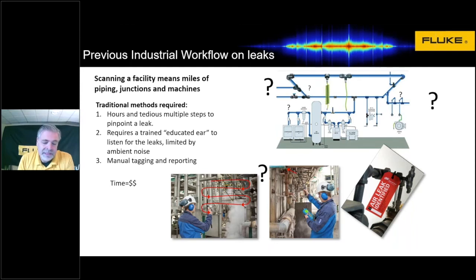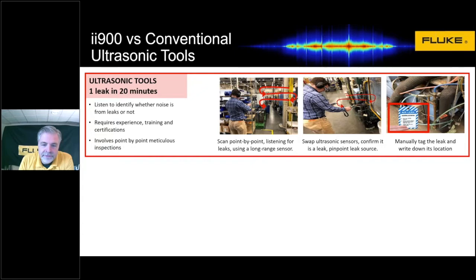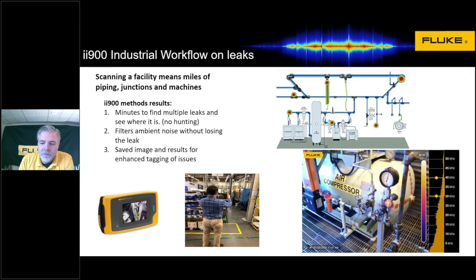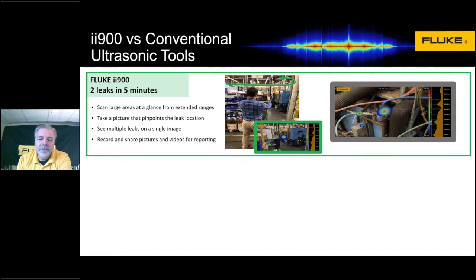This whole process took a lot of time. We went to a customer location very early on in the process of introducing the II900 and asked them to demonstrate how they would find a leak. They scanned listening point by point across a wide area — we were there for about 20 minutes and he found one leak and tagged it. We put the II900 in his hands, and he was able to scan the same area and found two leaks in under five minutes and was able to pinpoint that where he thought there was one leak, there were actually two.